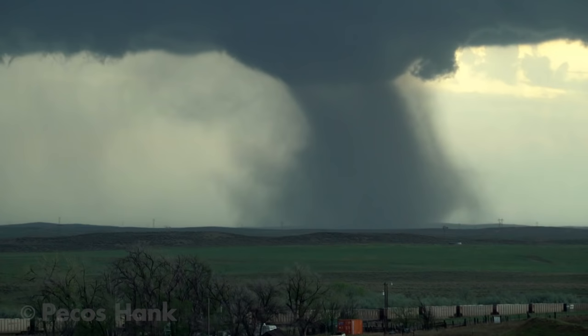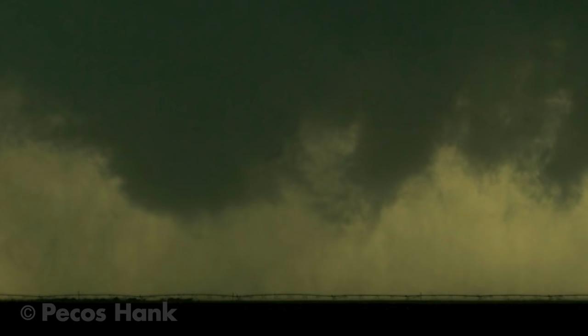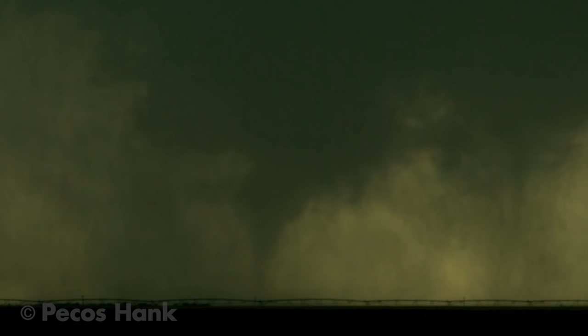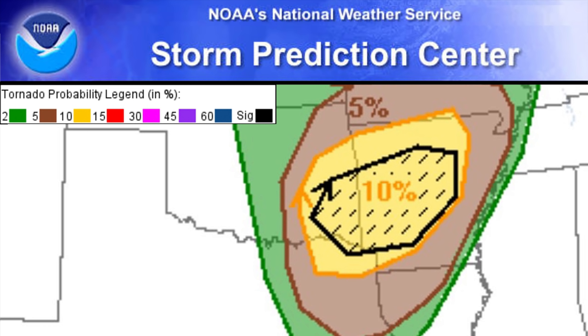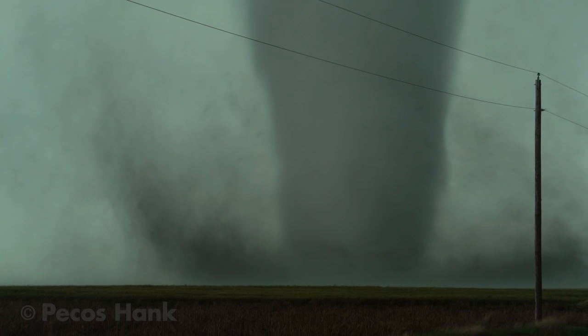Tornadoes rated EF two and above are labeled significant tornadoes. Day-of severe weather forecasts by the Storm Prediction Center give probabilities for the chance of tornadoes. If conditions suggest a risk for EF twos or larger, the Storm Prediction Center gives that area a special heads up outlined in black.